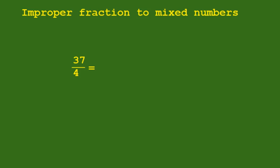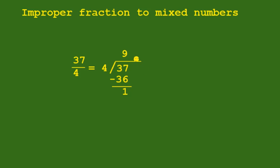In this example, we have 37 over 4. So this is 37 divided by 4. Convert this into a mixed number. So we have 37 divided by 4 equals 9. 9 times 4 equals 36. 37 minus 36 equals 1. So we have 9 and 1 over 4. So this is our mixed number. From the improper fraction, 37 over 4 is equal to 9 and 1 over 4.